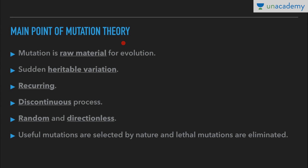The main features of Mutation Theory are: first, mutation is the raw material for evolution — these mutations are the variations which cause evolution. Second, it is a sudden heritable variation. Third, mutations are recurring, so the same mutant can appear again and again, increasing chances of selection by nature and leading to formation of new species.